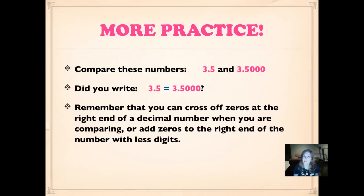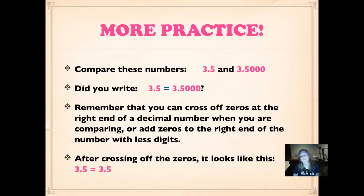Remember, you can cross off zeros at the end of a decimal number if they're on the right end and no digits with value come after them. If you're comparing them, you can also add zeros to the right end of a number if it has less digits than the other number so that they have the same number of digits. It just makes it easier to compare. So after crossing off the zeros, it looks like this: three and five tenths equals three and five tenths. That was easy.